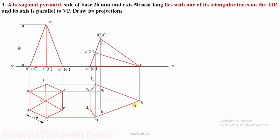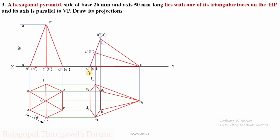Next, O dash A dash is a slant edge — if you see from the top it is clearly visible. Complete the base first: all corners A, B, C, D, E, F are visible from the top, so complete the hexagonal base as completely visible. Now for the remaining slant edges: O dash A dash and O dash B dash are visible from the top, so O1 A1 and O1 B1 must be drawn as continuous thick lines. Up to the midpoint it is clearly visible, so O1 C1 and O1 F1 are also drawn.